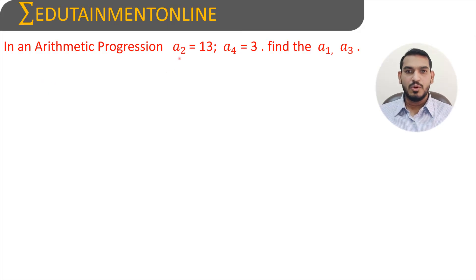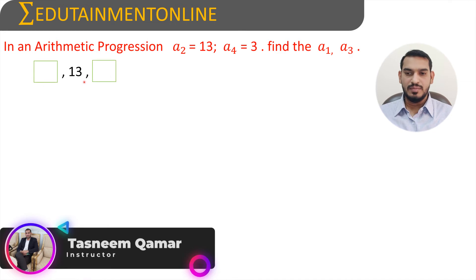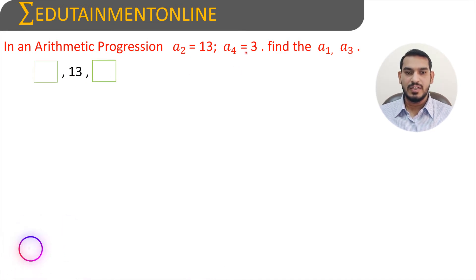In an arithmetic progression, a2 is equals to 13, a4 is equals to 3. Find a1 and a3. The given AP: a1 is not given, a2 is given as 13, a3 is not given, a4 is given as 3.